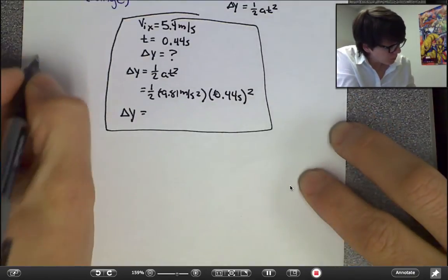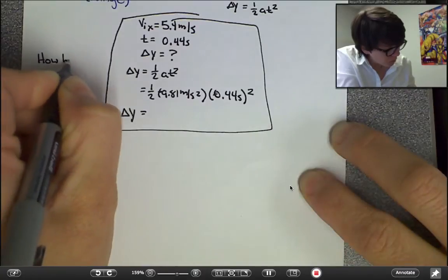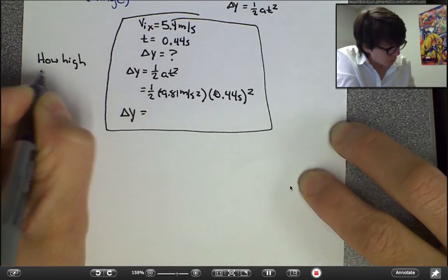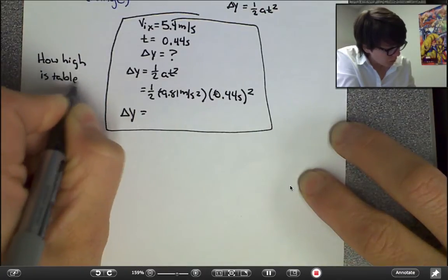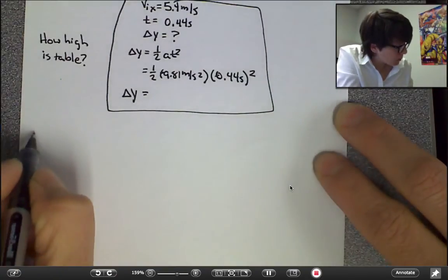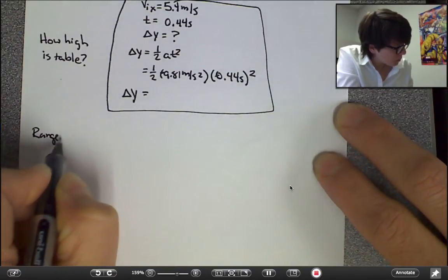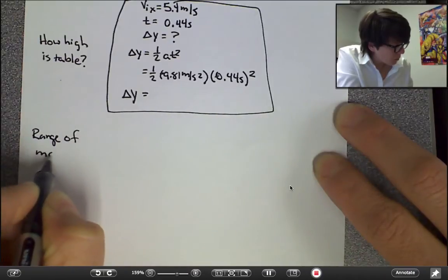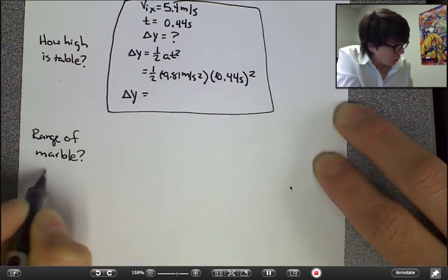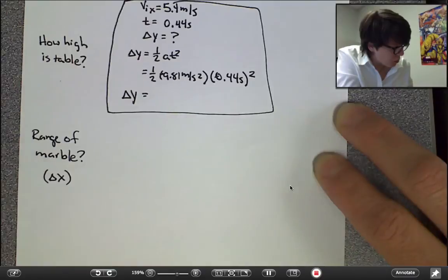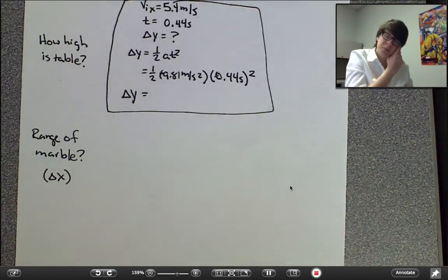So, one piece I could ask is how high is the table. The next piece we might solve for is... I'm going to ask you, what's the range of the marble? Really, what I mean by range is how far does it travel horizontally?